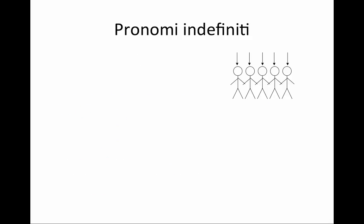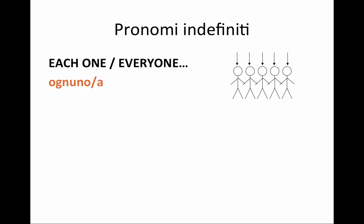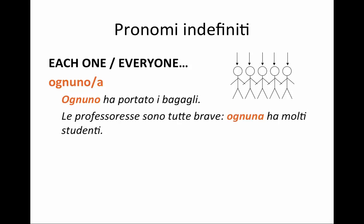Now let's talk about the pronouns. Pronouns replace the noun and so they're not going to be followed by a noun. The picture indicates each or every — each one or every one — and that is ognuno, or ognuna if it refers to something feminine. For example, 'ognuno ha portato i bagagli' — everyone brought their luggage. 'Le professoresse sono tutte brave. Ognuna ha molti studenti.' In the first case I use the general masculine gender, which in Italian describes an unspecified group. Ognuno means everyone assuming a mixed group. Ognuna is used when referring specifically to feminine nouns, like le professoresse.